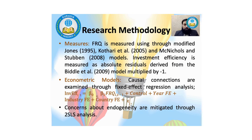Three measures are used for financial reporting quality: the Modified Jones (1995) model, the Kothari et al. (2005) model, and the McNichols and Stubben (2008) model. Each financial reporting quality measure is determined by multiplying minus one with the absolute residuals from the respective accrual models, so that higher values signify superior financial reporting quality. Investment efficiency is measured as absolute residuals derived from the Biddle et al. (2009) model multiplied by minus one, where higher values denote higher investment efficiency.